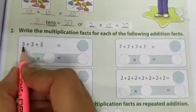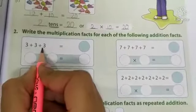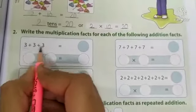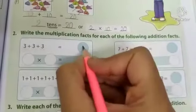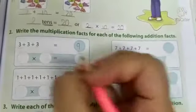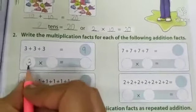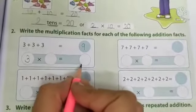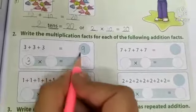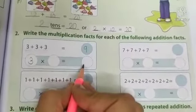And 3, 3 times is how much? 3 threes are 9. Okay? And which number is this? 3. We are writing this multiplication fact. This is the addition fact and this is the multiplication fact.